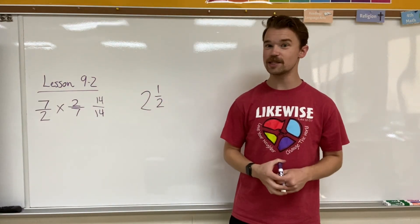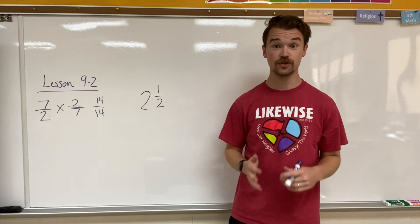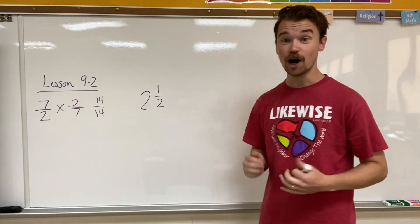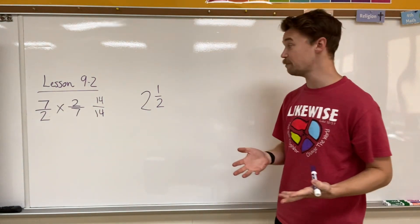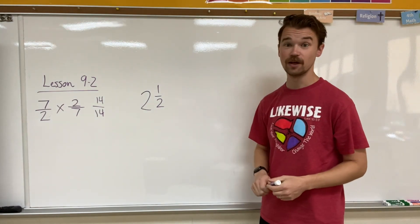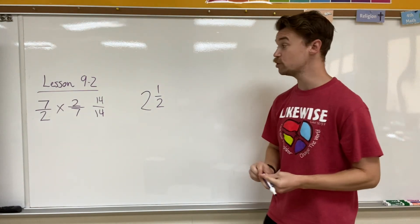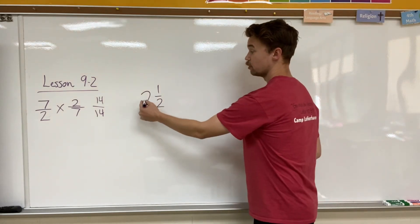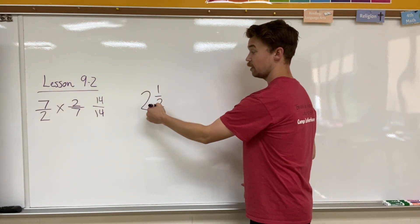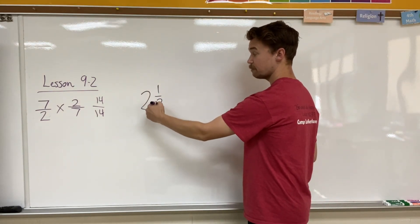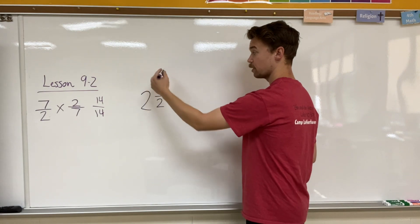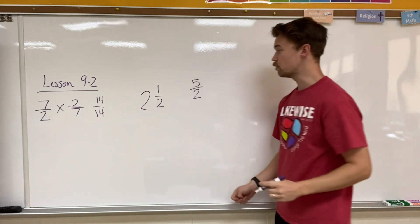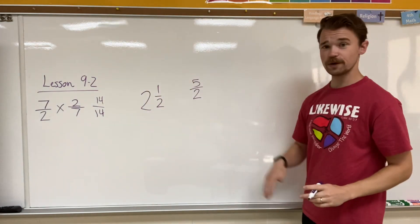It's our job in this lesson to find reciprocals of certain fractions, and we can even do that with mixed fractions. Our book gives us an example of 2 and a half. We can use the checkmark method to turn it into an improper fraction. Remember: multiply going down, add going up. 2 times 2 is 4, 4 plus 1 is 5 — so 5 over 2. That's our original fraction.